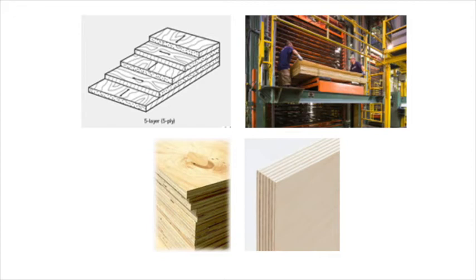Even Bruce Lee could not split wood across the grain with his bare hand. So, when we oppose the grains, we impart a great deal of strength to the material. The grain on one layer runs in one direction, and the grain on the next layer runs 90 degrees to that, the next layer is 90 degrees to that one, and so on up through the sandwich. We always have an odd number of sheets. In construction grade material, such as you see on the bottom left, that odd number of sheets is usually either 3, 5, or 7. In furniture grade material, seen on the bottom right, there can be as many as 13 or even 15 layers in a piece of plywood.